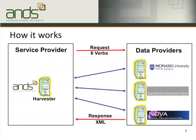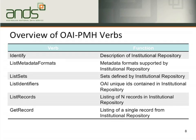Given we've already talked about service providers and data providers, let's briefly talk about how it works. In data capture projects, the service provider is ANTs' harvester, and the data provider can be your institutional repository — Monash Arrow repository, Sweden Research Bank, Nova at University of Newcastle, or Vivo at Uni Melbourne. Our harvester always requests six important verbs to your data provider to get data sets, and your institutional repository returns well-formed XML data.